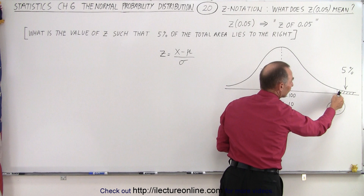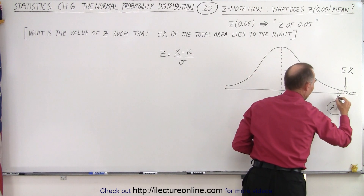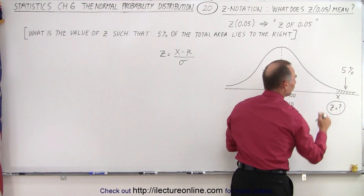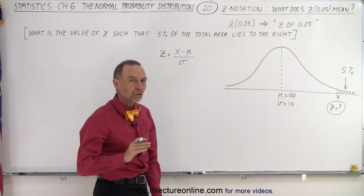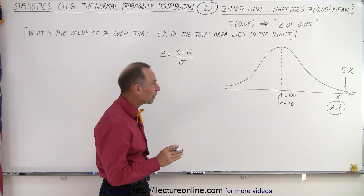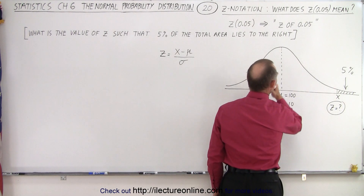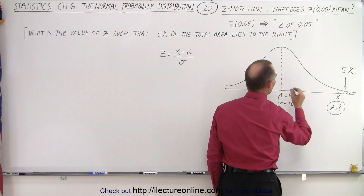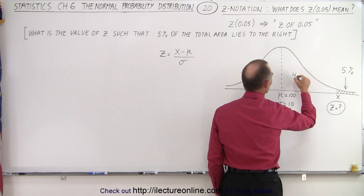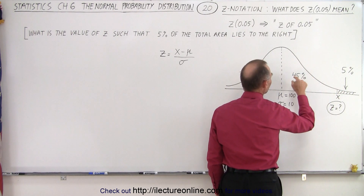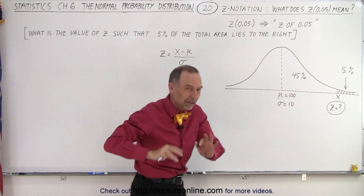We're looking for the Z value corresponding to X being right there — that is the value of X, and so the Z value corresponding to that. We use Z value as it relates to this area to the right of the mean. If this is 5%, then we're looking at this as being 45%, because the two must add up to 50%.